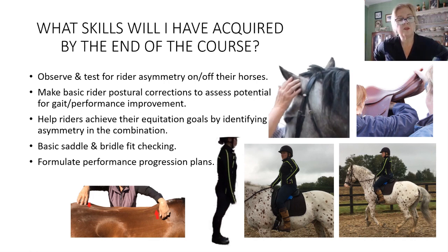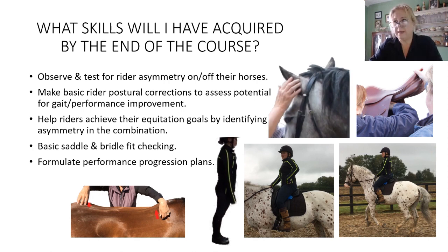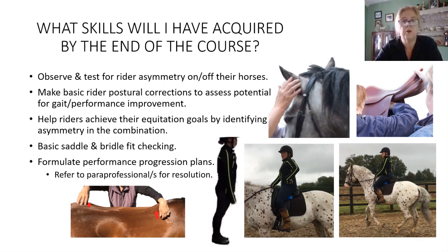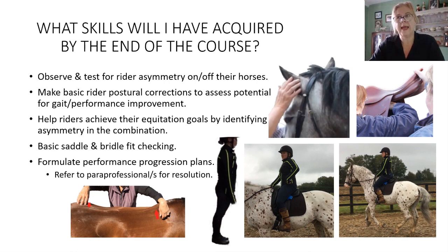You'll be able to carry out basic saddle and bridle fit checking. The whole point of this is that at the end, the assignment is to formulate a performance progression plan. You'll complete three case reports and some three-to-five minute films, and put together a programme of who to refer to — the learning outcome is to refer to paraprofessionals for resolution if you don't have a particular skill set yourself. The full course includes the performance element — preparing the horse for performance and for performance saddle fitting — that was the 2021 vision.